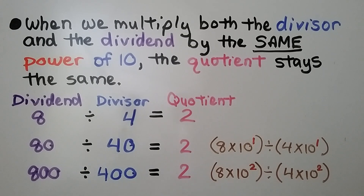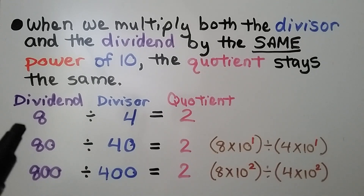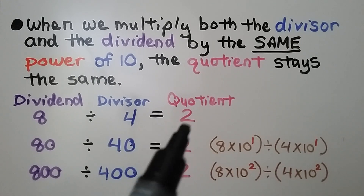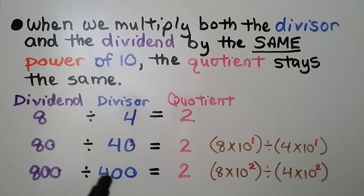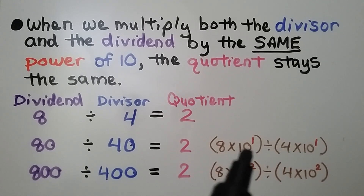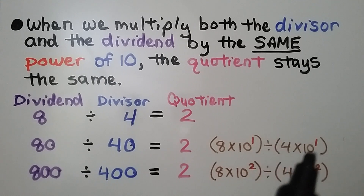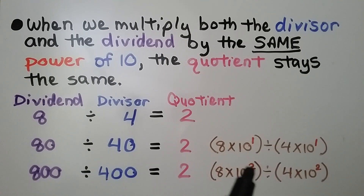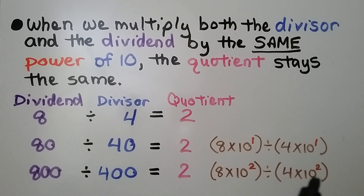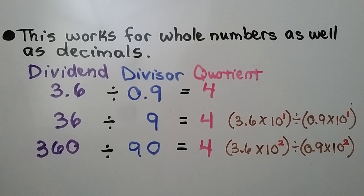When we multiply both the divisor and the dividend by the same power of 10, the quotient stays the same. For example, 8 divided by 4 equals 2, and 80 divided by 40 equals 2, and 800 divided by 400 equals 2. Whether we use 10 to the first power or 10 to the second power, the divisor and dividend are multiplied by the same power of 10. This works for whole numbers as well as decimals.